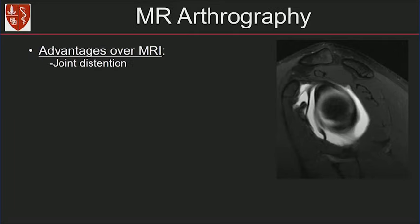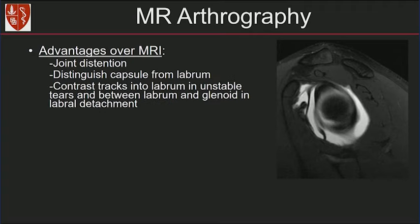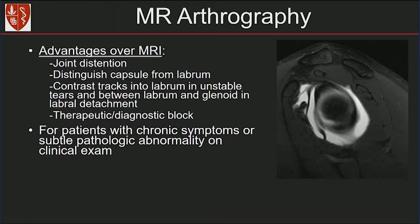MR arthrography has several advantages over MRI, mainly related to joint distension. It allows us to distinguish the capsule from the labrum, see contrast tracking into the labrum in unstable tears, and between the labrum and the glenoid in labral detachment. We can also perform a therapeutic or diagnostic block at the same time, and MR arthrography is very useful for patients with chronic symptoms or subtle pathologic abnormality on clinical exam.